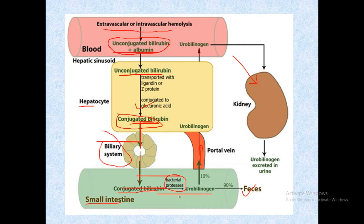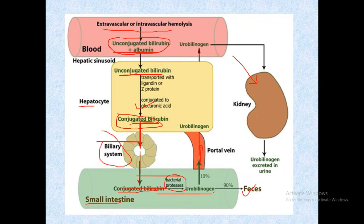Ten percent of the urobilinogen enters the portal circulation and travels to the kidney, where urobilinogen is converted to urobilin. This urobilin is excreted in urine, giving urine its yellow color.